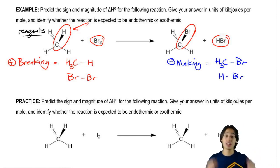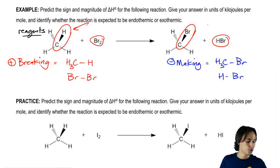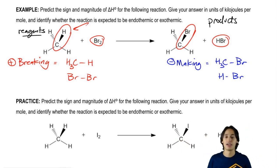So now all I have to do is pull down the values from my chart and whichever ones are on my breaking side are going to be positive. Whichever ones are on my product side or my making side are going to be negative.